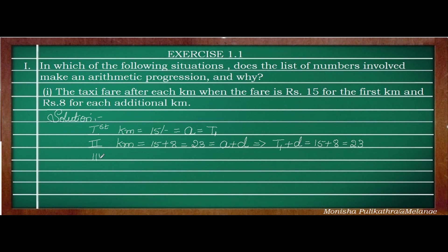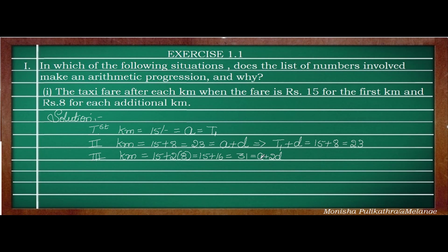Going to the third kilometer: 23 + D = 23 + 8. Using the formula A + 2D = 15 + 2×8 = 15 + 16 = 31. So the third term is 31, in the form A + 2D.